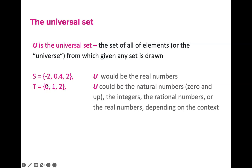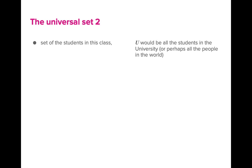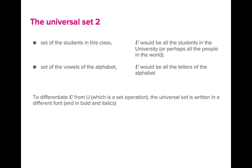We also have set P containing 0, 1, and 2. The universal set of this set could be natural numbers, integers, rational numbers, or real numbers, depending on the context. Other examples: the set of students in this Komsai 56 class has a universal set of all students in the university or all people in the world. The set of vowels in the alphabet has a universal set of all letters of the alphabet. Note: differentiate U (universal set) from the union operation, which we will discuss later — the universal set is written in a different font.